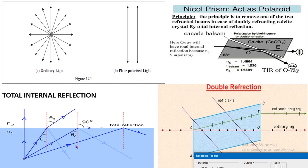Total internal reflection occurs when there is complete reflection of a ray of light within a medium such as water or glass from the surrounding surface, and it is called total internal reflection.